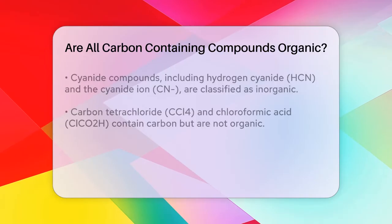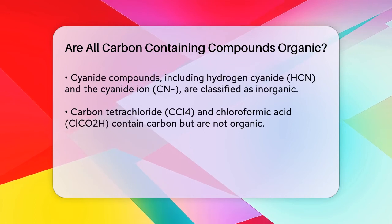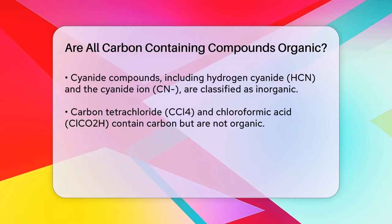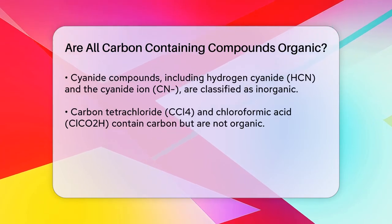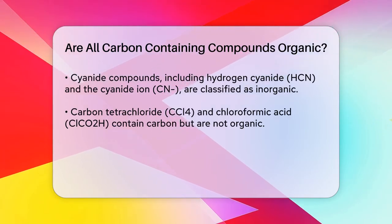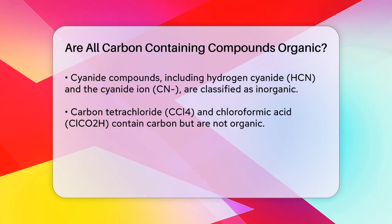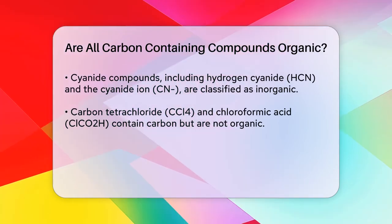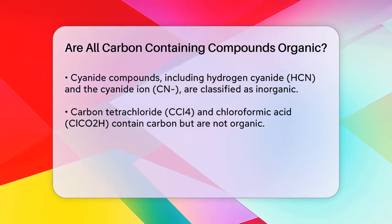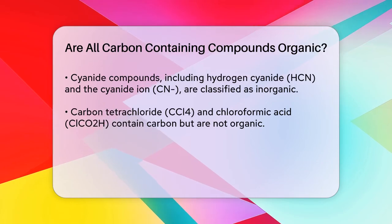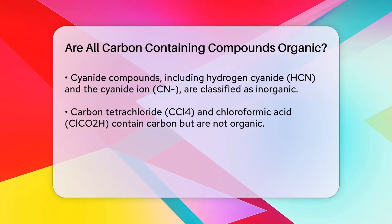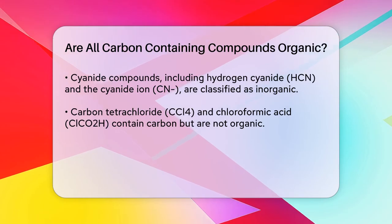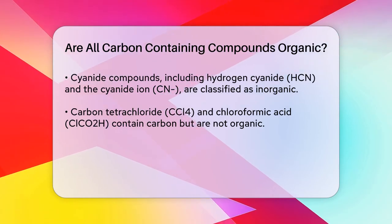Another example is cyanide compounds, such as hydrogen cyanide (HCN) and the cyanide ion (CN). Despite containing carbon, these compounds are typically classified as inorganic due to their chemical structure and properties. Additionally, compounds like carbon tetrachloride (CCl4) and chloroformic acid also contain carbon but lack the carbon-hydrogen or carbon-carbon bonds, so they are not classified as organic.